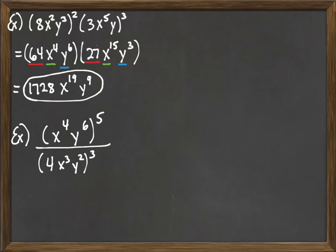Here we have the quantity x to the fourth, y to the sixth, being raised to the fifth power. And then on the bottom we have 4x to the third, y squared, raised to the third power. So just like we did above, we're going to have to begin by raising each thing to their appropriate power. So as we begin the problem here, we would have x to the fourth raised to the fifth power. Remember, we drop down to multiplication. 4 times 5 would make that x to the twentieth.